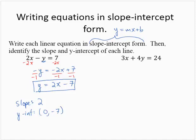For the second example, 3x plus 4y equals 24. I am going to isolate the y variable by first subtracting 3x from both sides. Then 4y equals negative 3x plus 24.